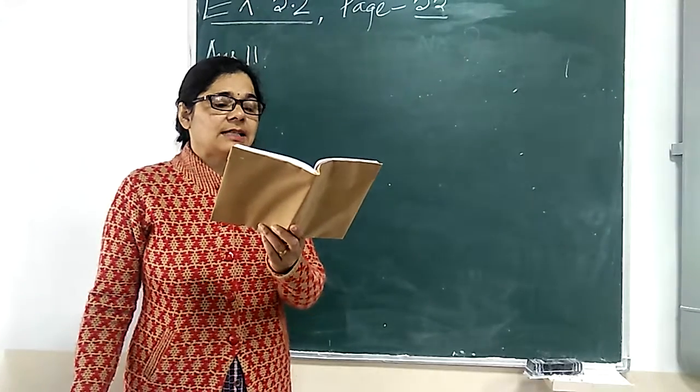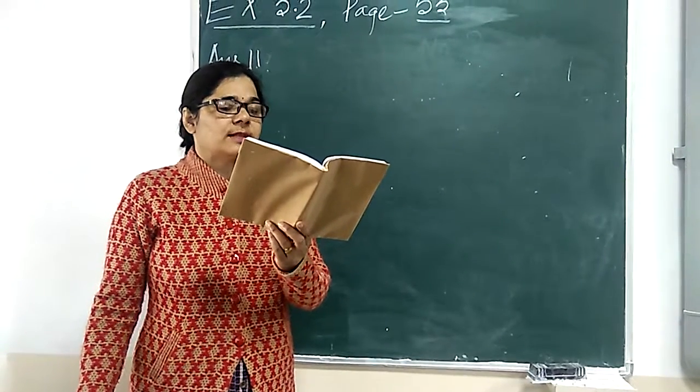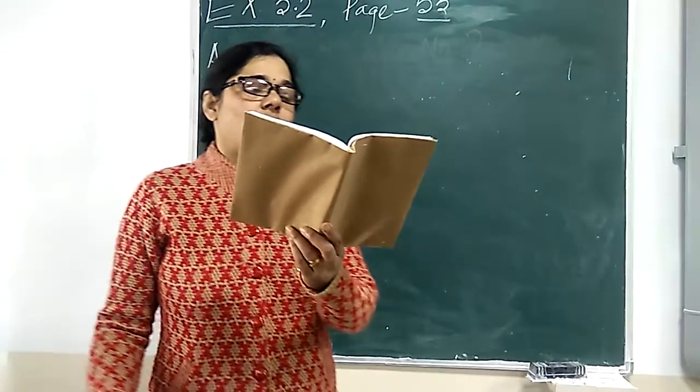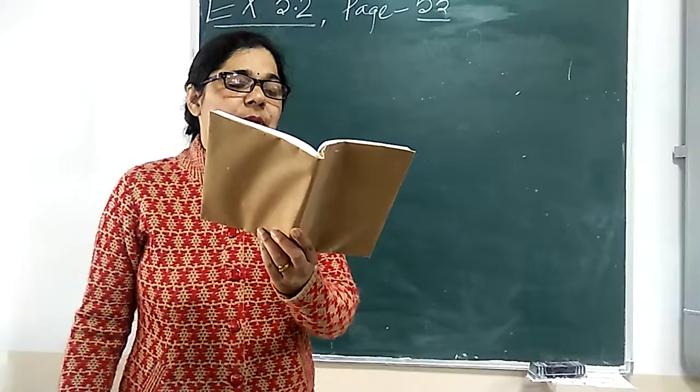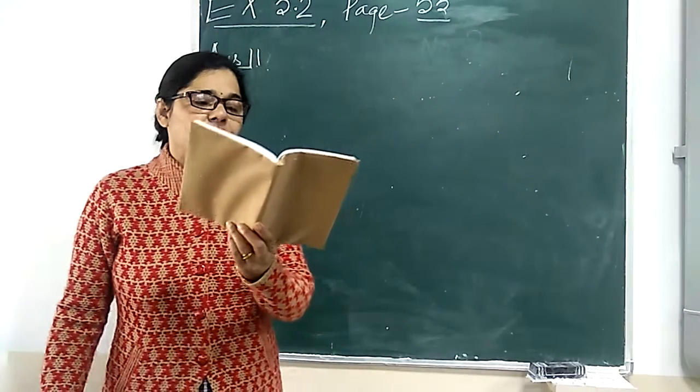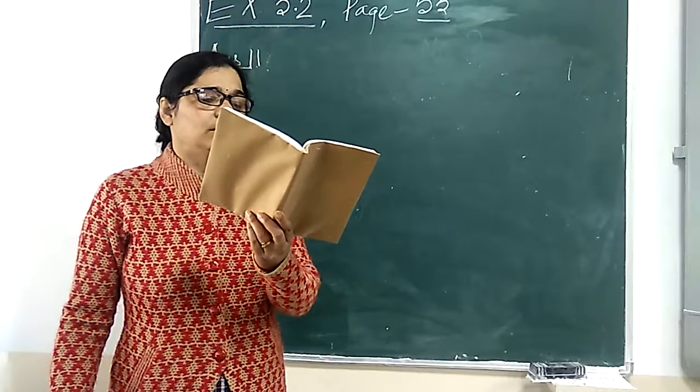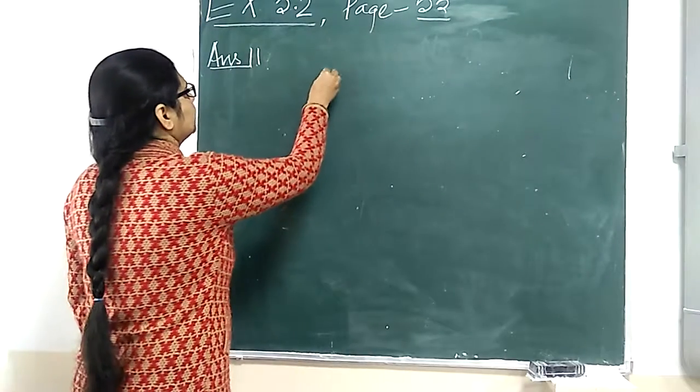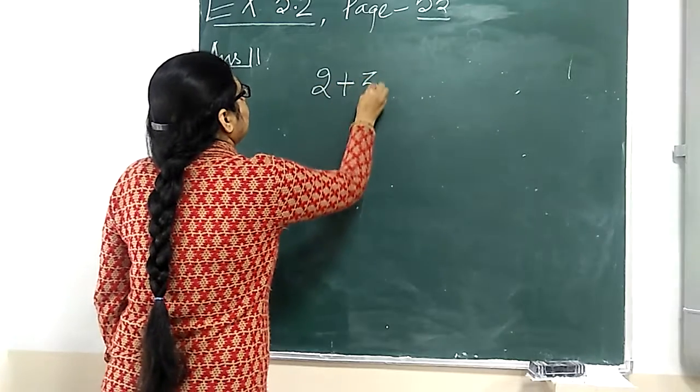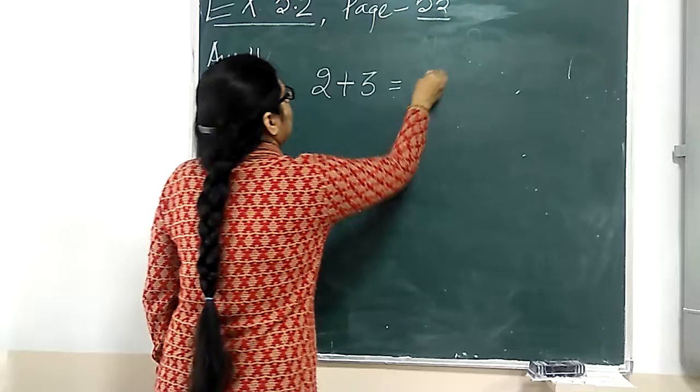Prime numbers less than 20, whose sum is divisible by 5. What we have to do, write 5 pairs of prime numbers. 5 pairs of prime numbers less than 20. Like 2 plus 3 is equal to 5.